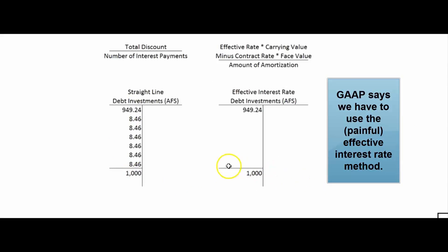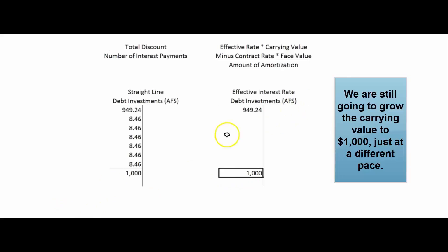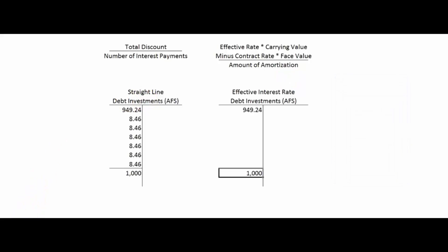GAAP won't let us use the straight-line method if there's a material difference between it and the effective interest rate method — we have to use the effective interest rate method. GAAP says it produces a periodic interest expense equal to a constant percentage of the carrying value of the bonds, and it matches expenses and revenues better. We're still going to go from $949.24 up to $1,000 — just at a slightly different pace. The formula: take the effective rate times the carrying value of the bonds, minus the contract rate times the face value, and that gives you the amortization amount. I can never remember that formula, but I can remember that a journal entry is supposed to balance.